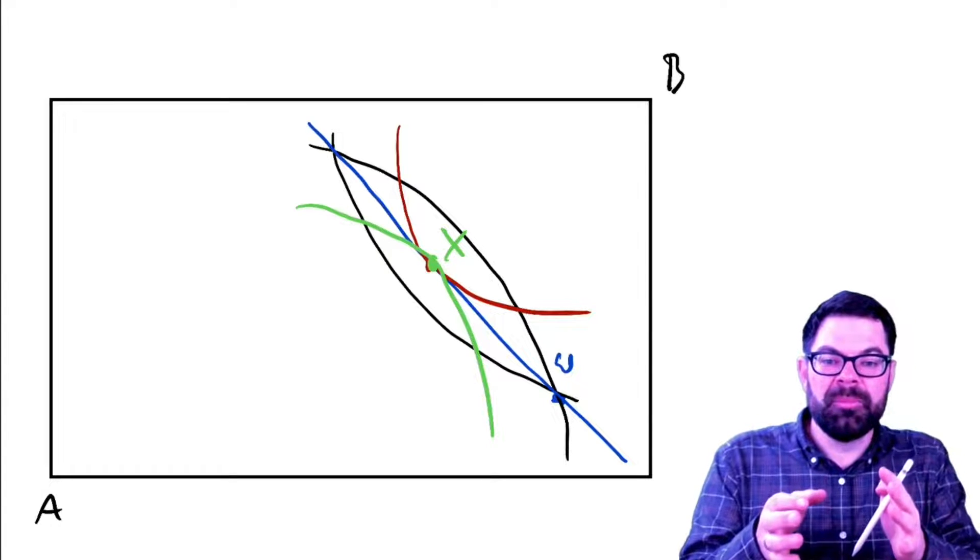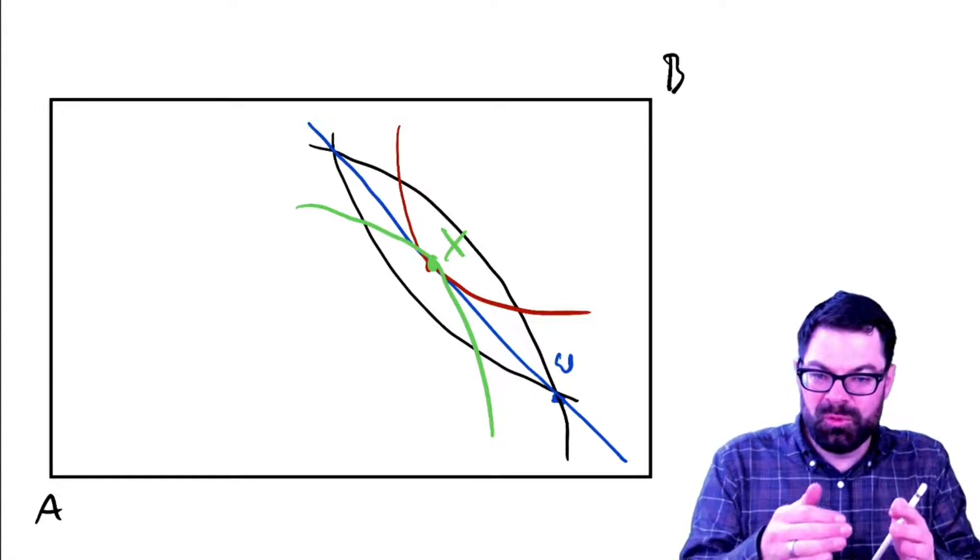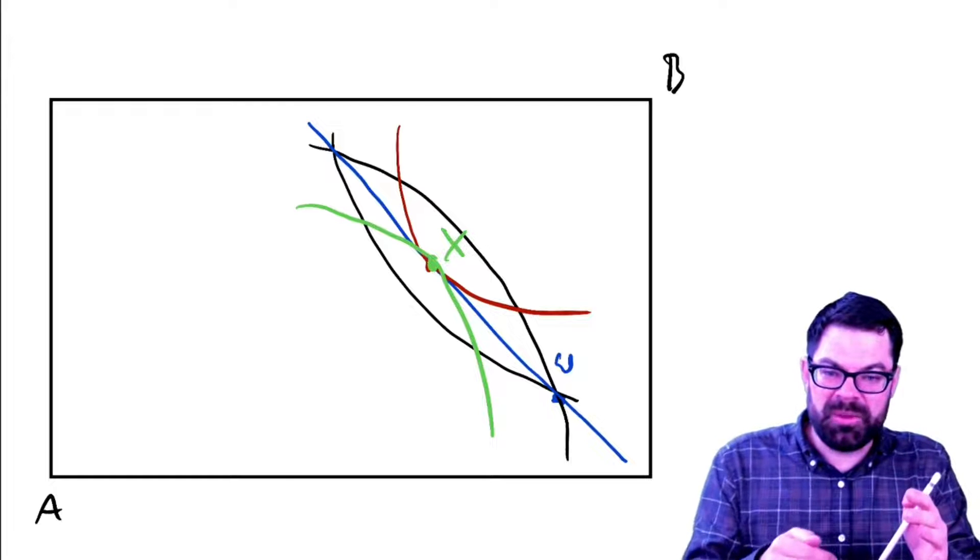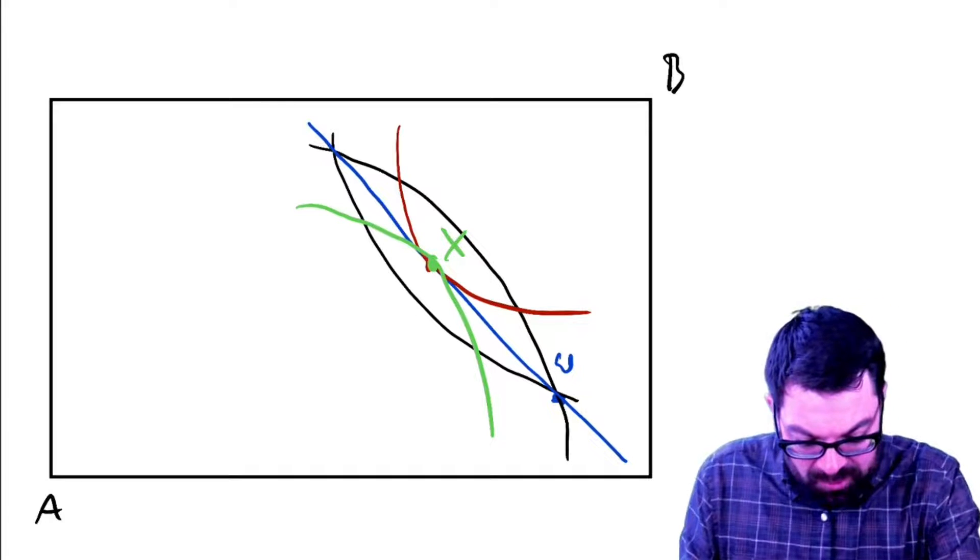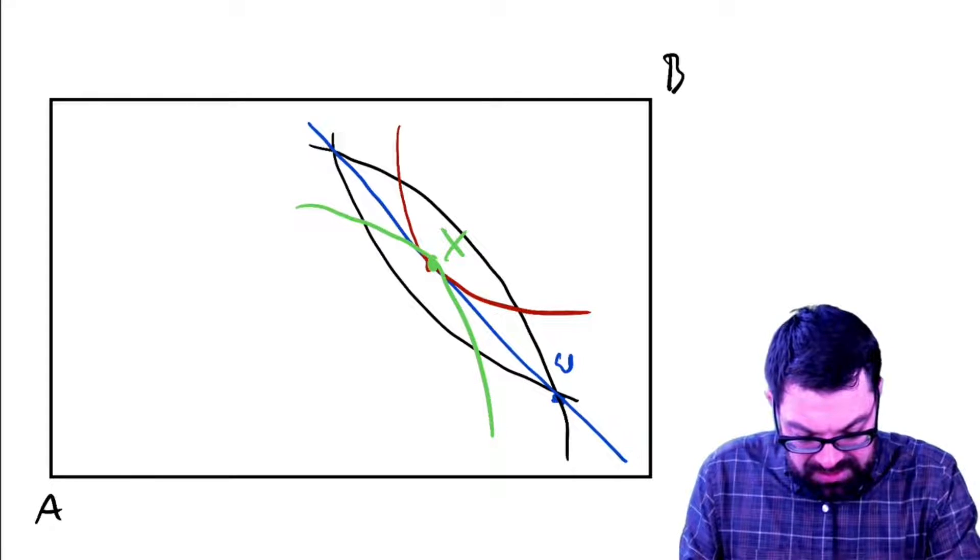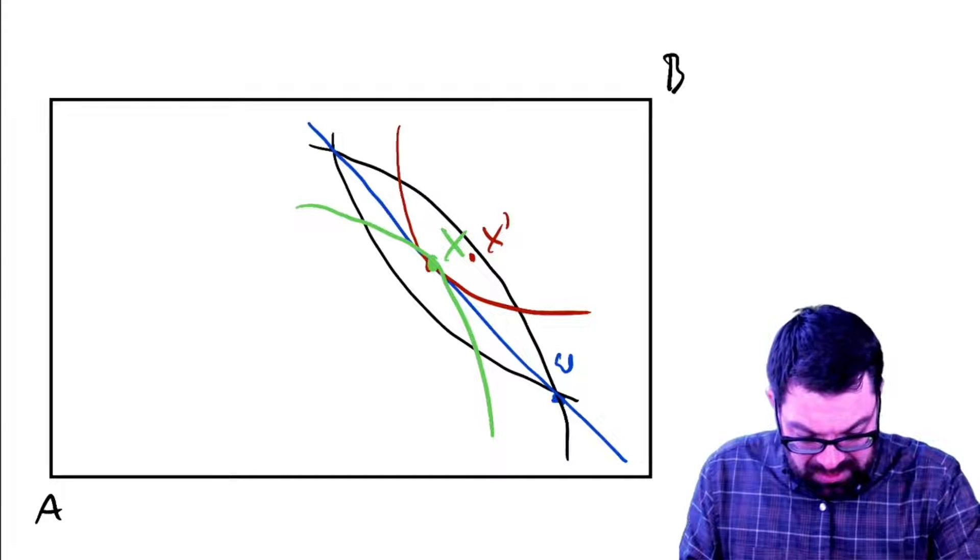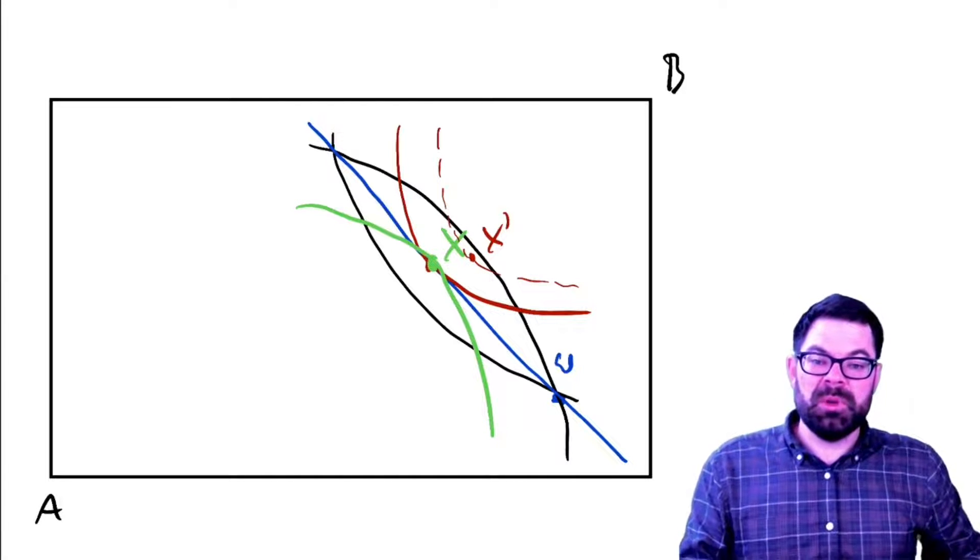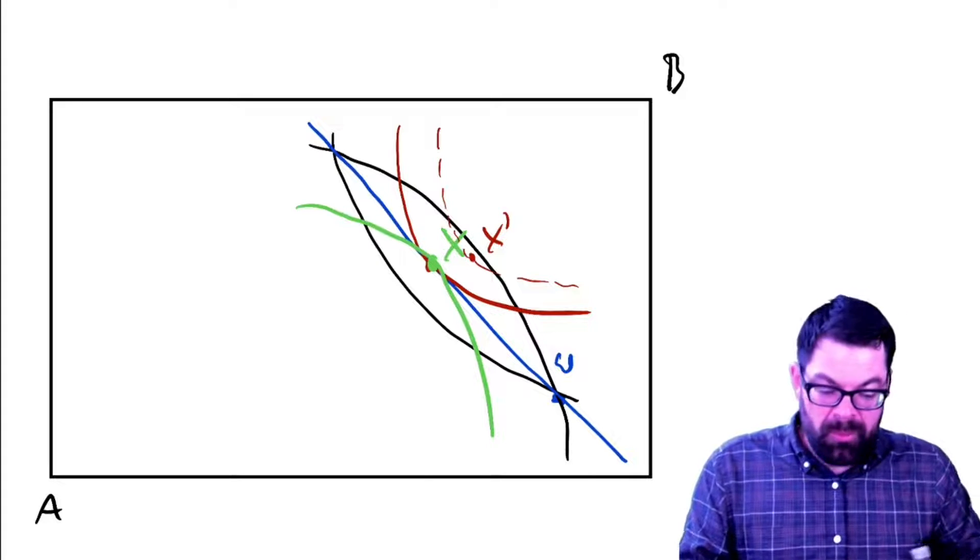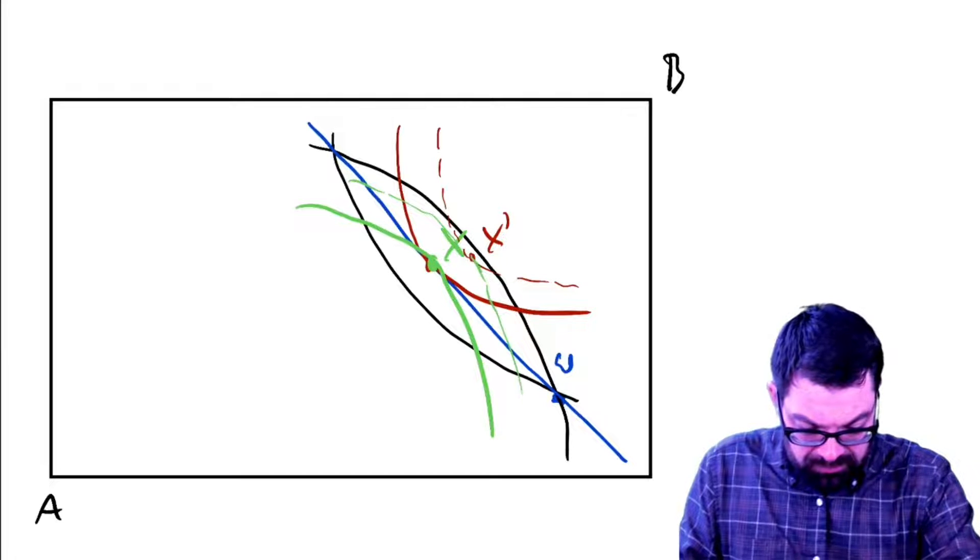So here, from point x, we cannot move away and make someone else better off without making someone else worse off. So suppose we move from point x to point, let's go in here to point x prime, right? So then obviously for Andrew, this would be better. Here, he would reach a higher utility level, but for Betty, it would be clearly worse.